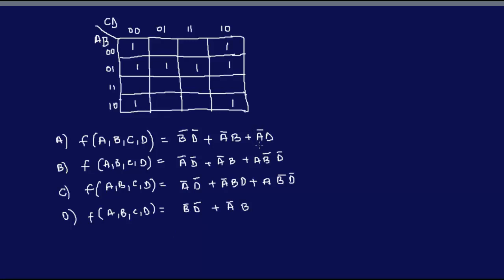So this is a Karnaugh map example. Basically we are given a K-map and the question here is to find the logic function that best represents the minimal SOP expression. The way I do it is pretty elementary, but it works for me. First of all, we have to circle the maximum ones that we have. Here are the maximum ones in this case over here.